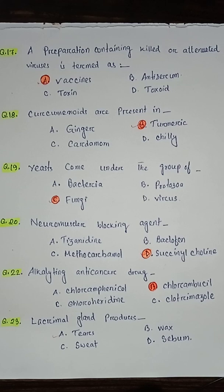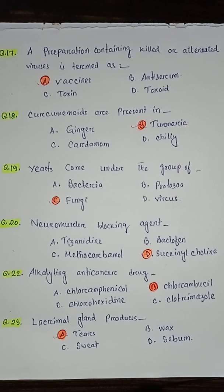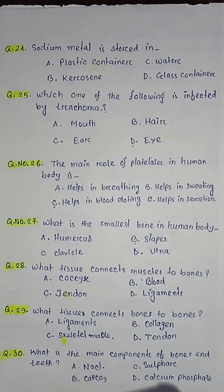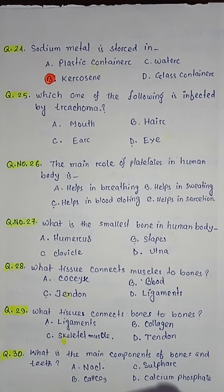Question number twenty-four: sodium metal is stored in — option A plastic container, option B kerosene, option C water, option D glass container. So the correct answer is option B kerosene.